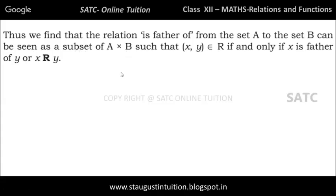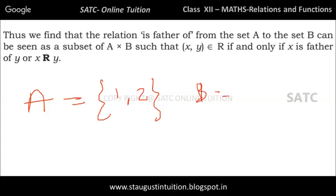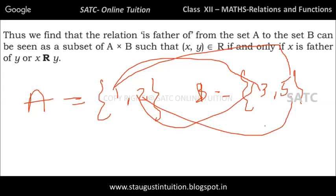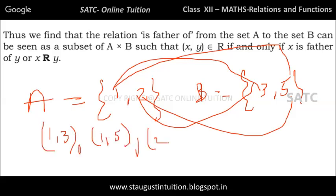Thus, the relation 'is father of' from set A to set B can be seen as a subset of A cross B. For example, if A is {1, 2} and B is {3, 5}, then A cross B is: (1,3), (1,5), (2,3), (2,5).